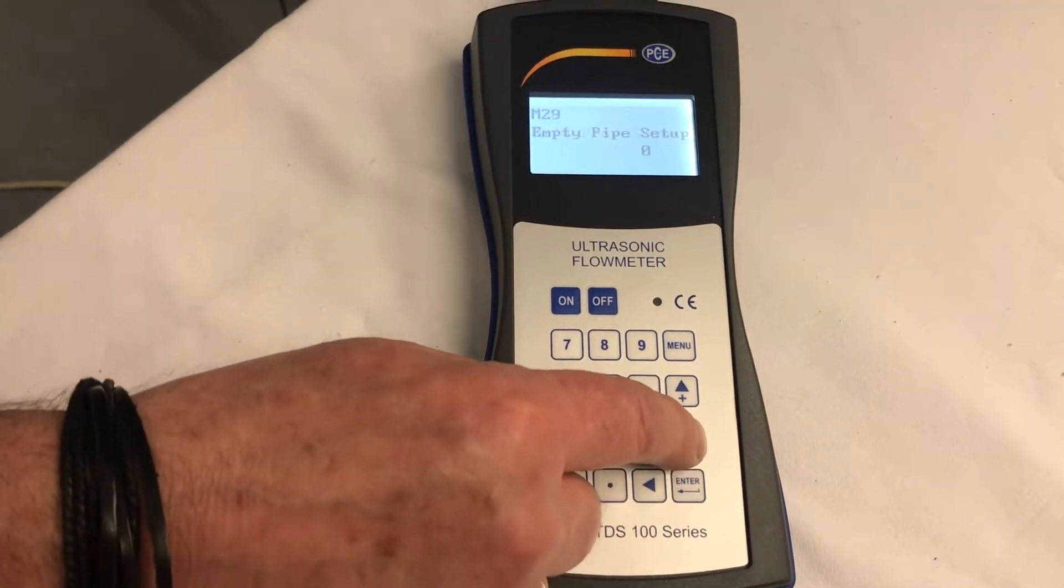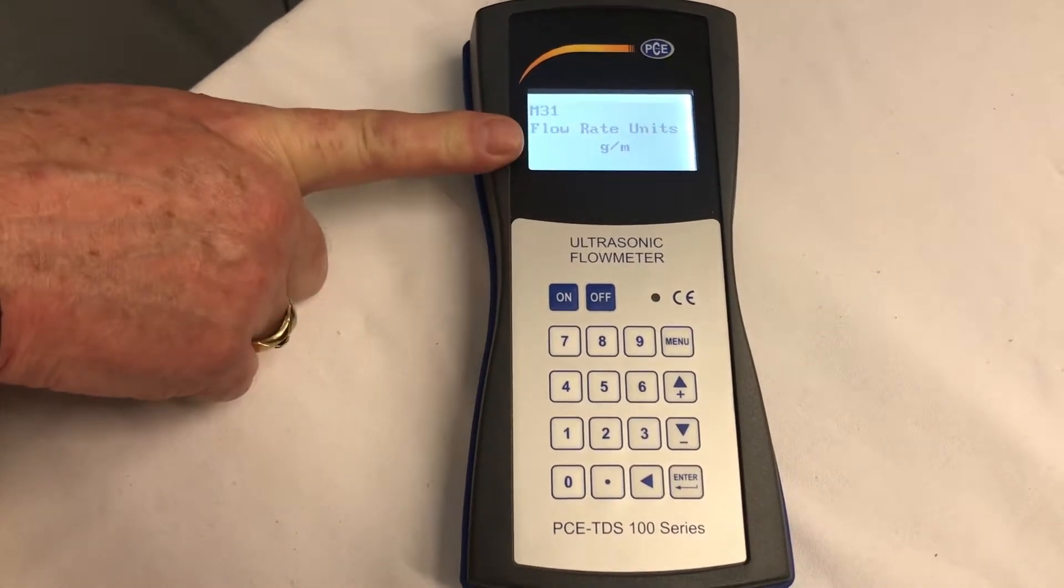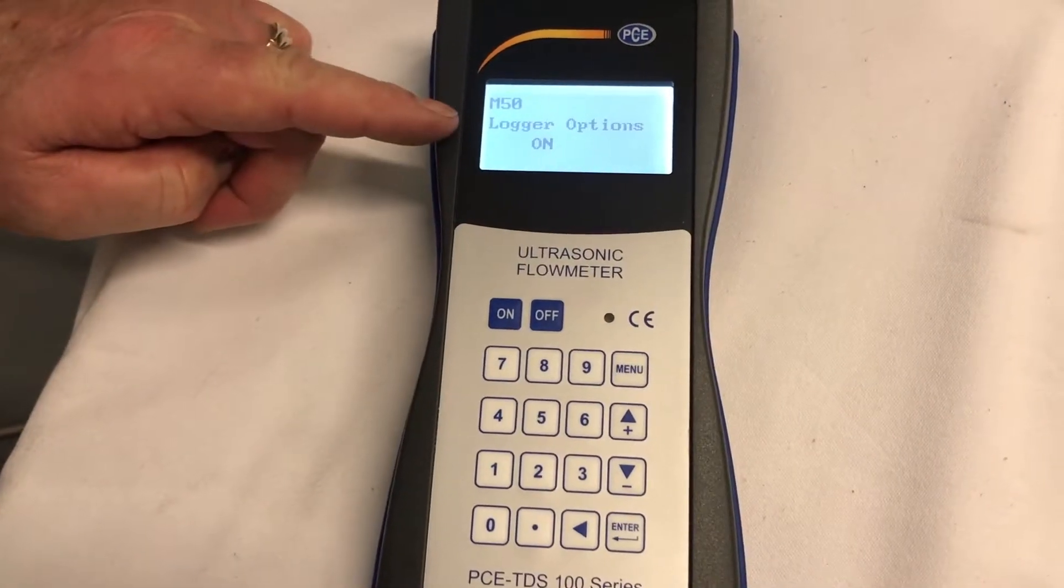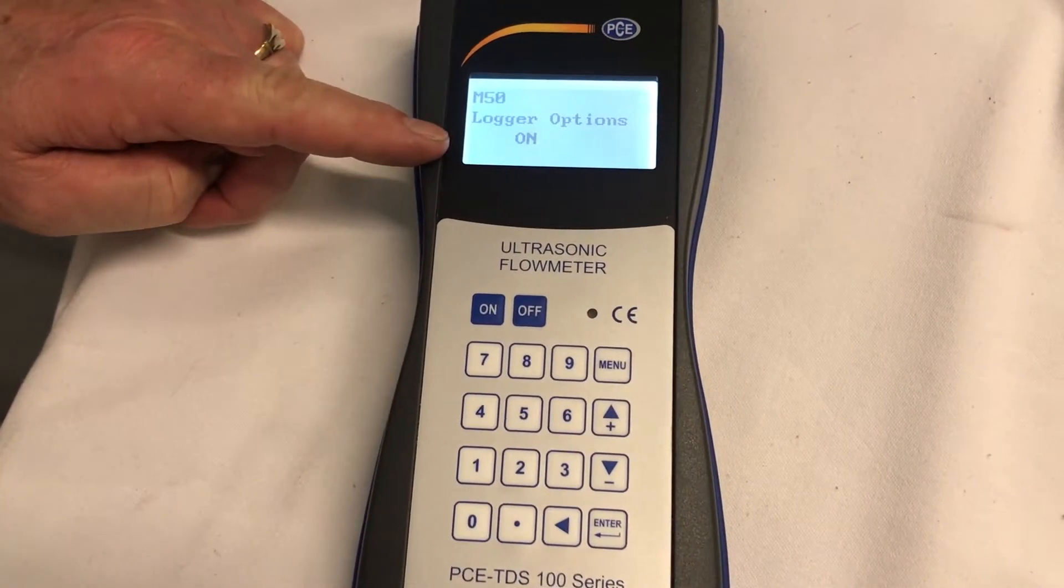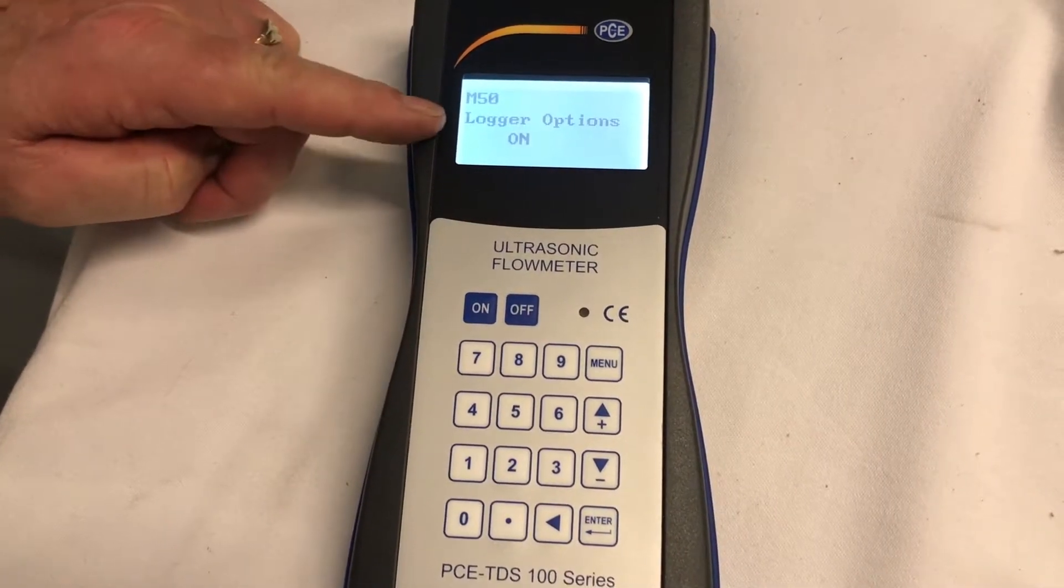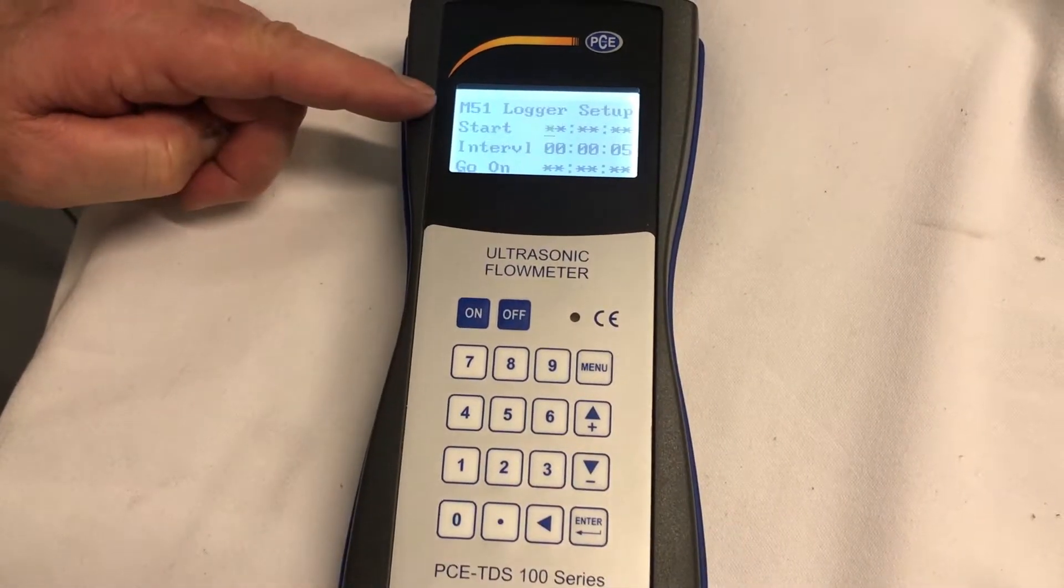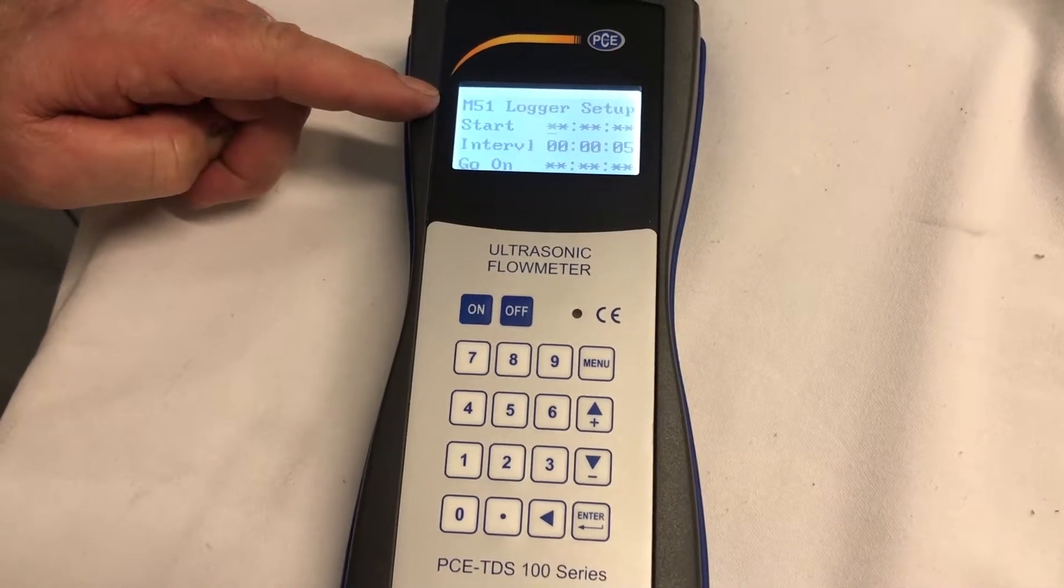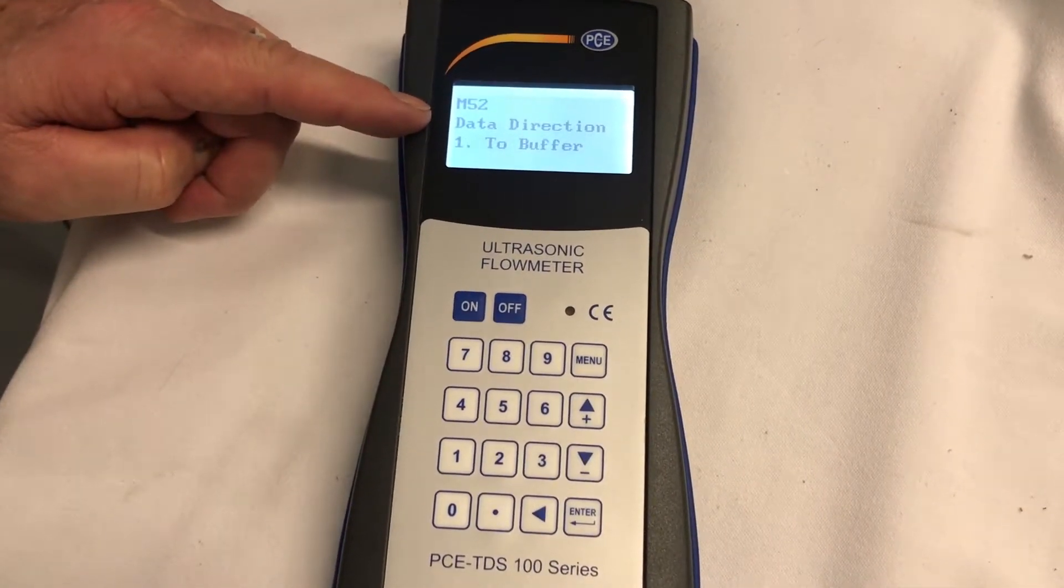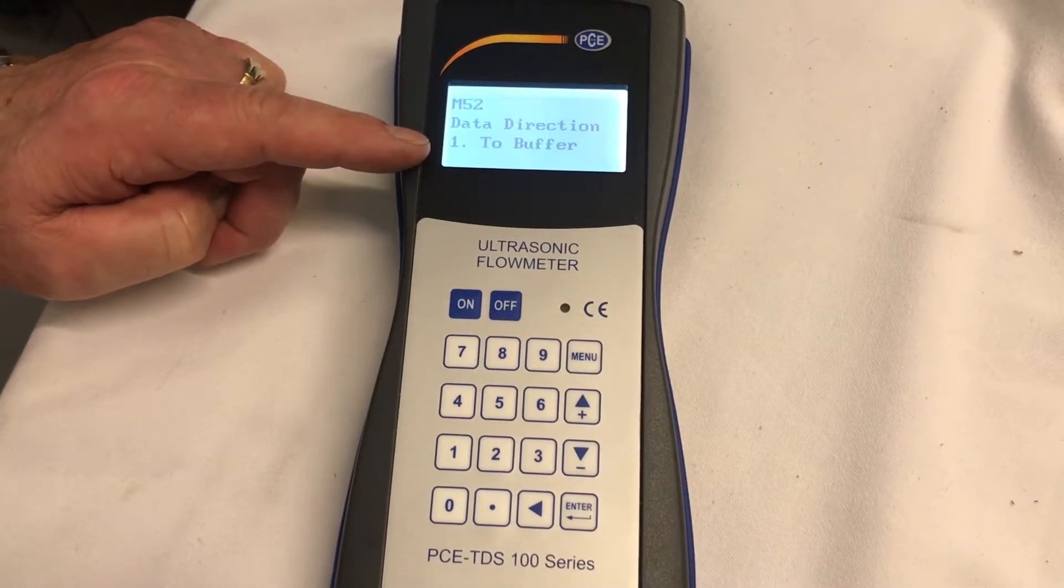After that, we're going to M31, which is the flow rate. I'm measuring in gallons per minute. Now we're at M50, logger options on. This is collecting the data from the sensors going into your memory, which is the next step. M51, M52. We want to make sure that the data direction is going to the buffer. The buffer is the memory that's collecting your data.